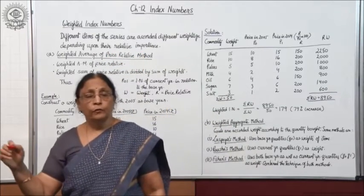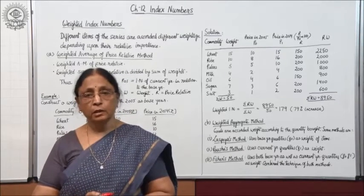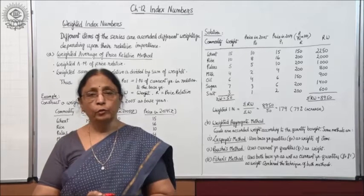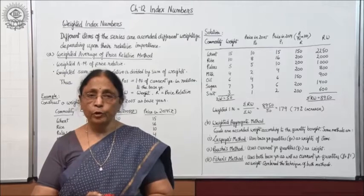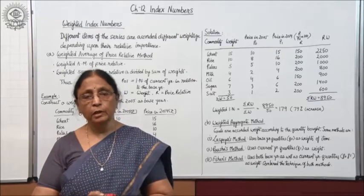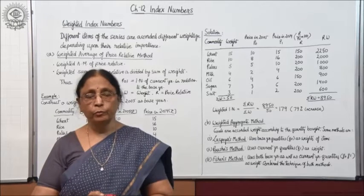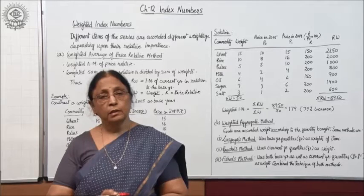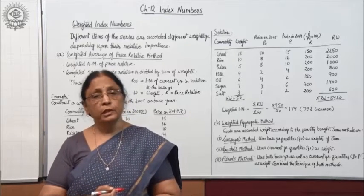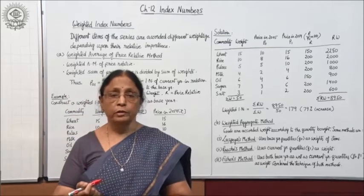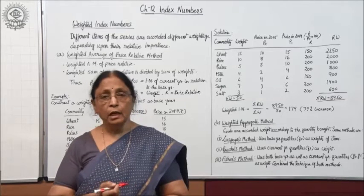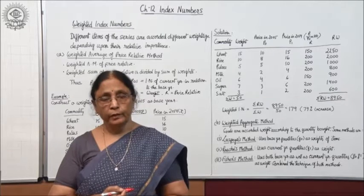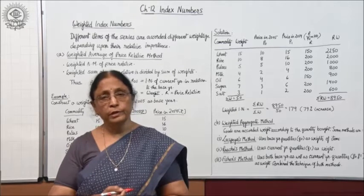We consume a variety of goods, and different items are being consumed by consumers. All the commodities or goods we consume are not of equal importance to us — some goods are very important and some are less important. For example, wheat is considered a very important product, similarly rice, milk, etc. Whereas other goods like pen, pencil, stationery, or vehicle are important but not as important as food articles.